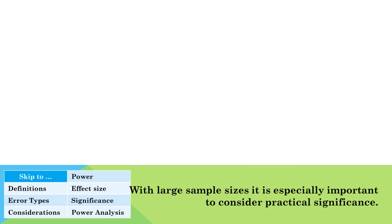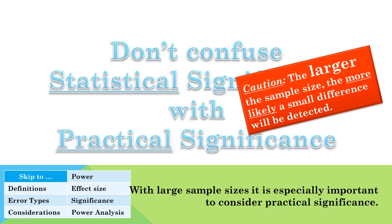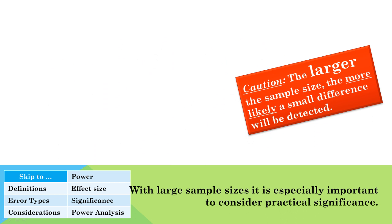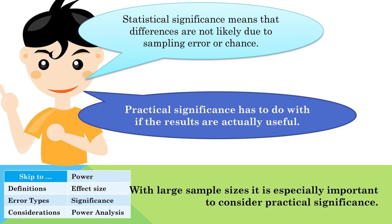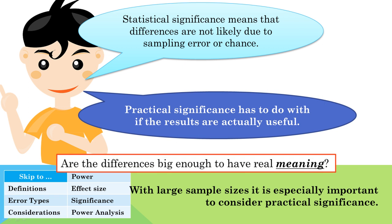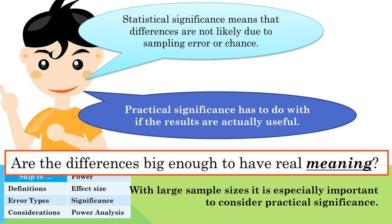Just because a study has a statistically significant result does not mean the results will have practical significance. Statistically significant differences can always be found from very small differences if the sample size is large enough. Practical significance relates to how relevant the findings are to the question being asked. For example, a study may find a statistically significant difference in the lifespan of people who take a new drug compared to the old one, but the difference may be only a few hours and come with very severe side effects. Most people would say that improvement is not practically significant — make sure you consider if the differences are big enough to have real meaning.